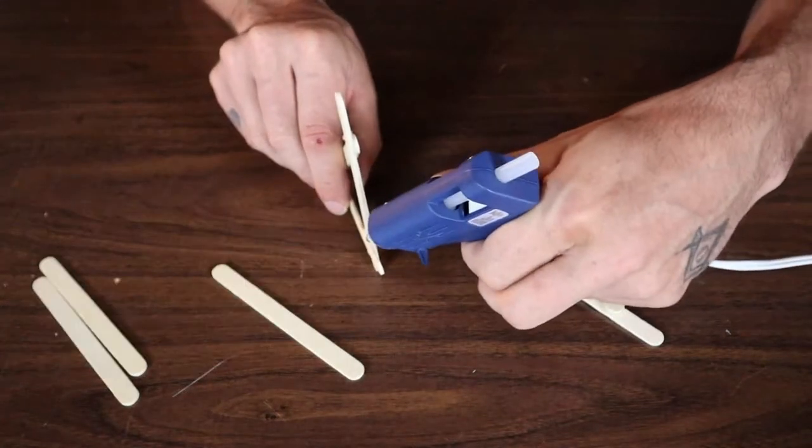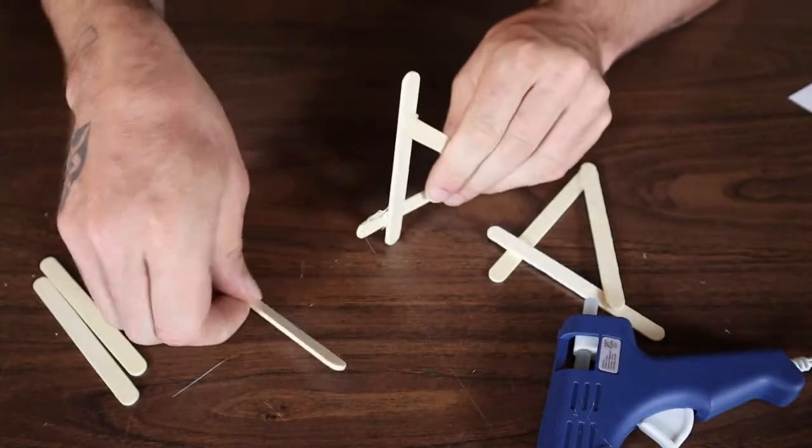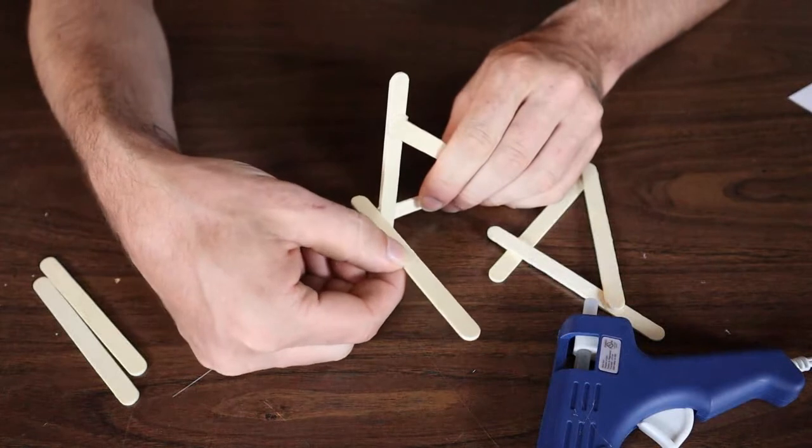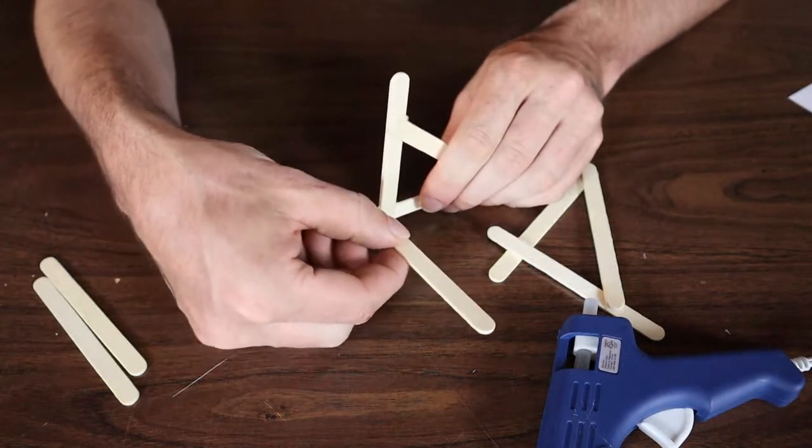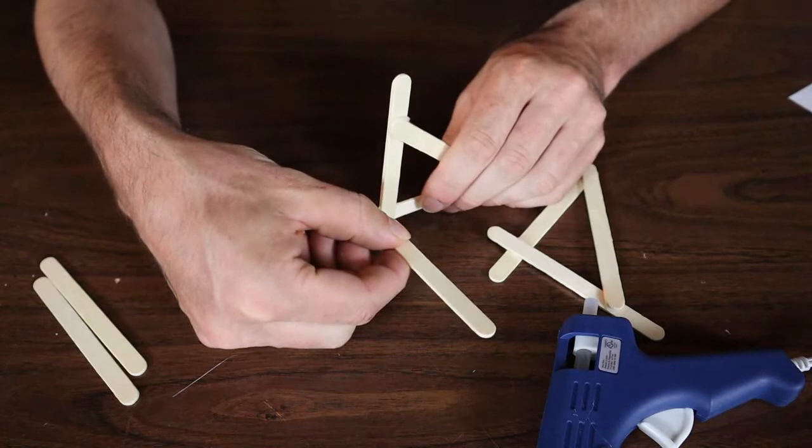That part can be a little tricky. What I would do probably is just put some glue on here and then just place your popsicle stick on there and just hold it until it's totally dry, and then you'll be able to, it'll hold itself up while you glue on the other side.